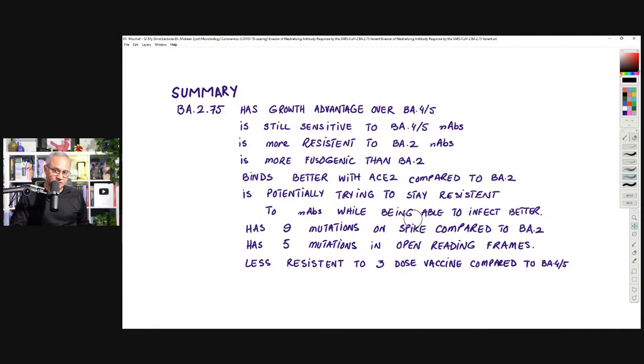So once again, the same summary. Growth advantage over BA.4 and 5, but slight. Neutralizable by the antibodies against BA.4 and 5. Less neutralizable by the antibodies against BA.2, neutralizable by the three-dose vaccine, not two. They actually had two-dose vaccine individuals, healthcare workers, and they had three-dose vaccine healthcare workers. So three-dose vaccine healthcare workers' antibodies were able to neutralize it better. That is very interesting. Previous vaccines that were becoming ineffective have started becoming better effective.